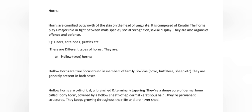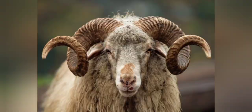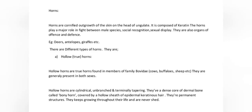Hollow horns are true horns found in members of family Bovidae — cows, buffaloes, sheep etc. They are generally present in both sexes. Hollow horns are cylindrical, unbranched and terminally tapering. They have a dense core of dermal bone called bony horn core, covered by a hollow sheath of epidermal keratinous horn. They are permanent structures that keep growing throughout their life and are never shed.